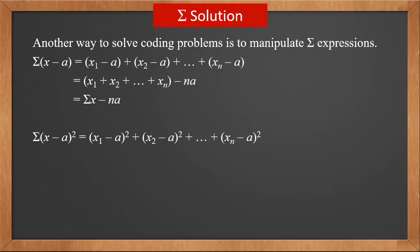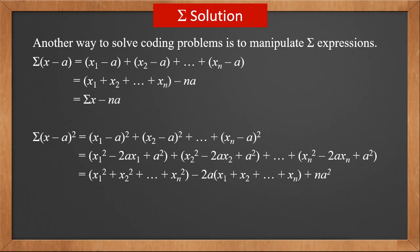Sigma x minus a squared is x1 minus a squared, plus x2 minus a squared, all the way to xn minus a squared. Open each square and we get x1 squared minus 2ax1 plus a squared, plus x2 squared minus 2ax2 plus a squared, and all the way to xn squared minus 2axn plus a squared. Combine all x squared terms and we get x1 squared plus x2 squared and all the way to xn squared. Combine all 2ax terms together and take out the common factor 2a. We get minus 2a times x1 plus x2 plus all the way to xn. And there are n number of a squared. Therefore sigma x minus a squared is sigma x squared minus 2a sigma x plus na squared.